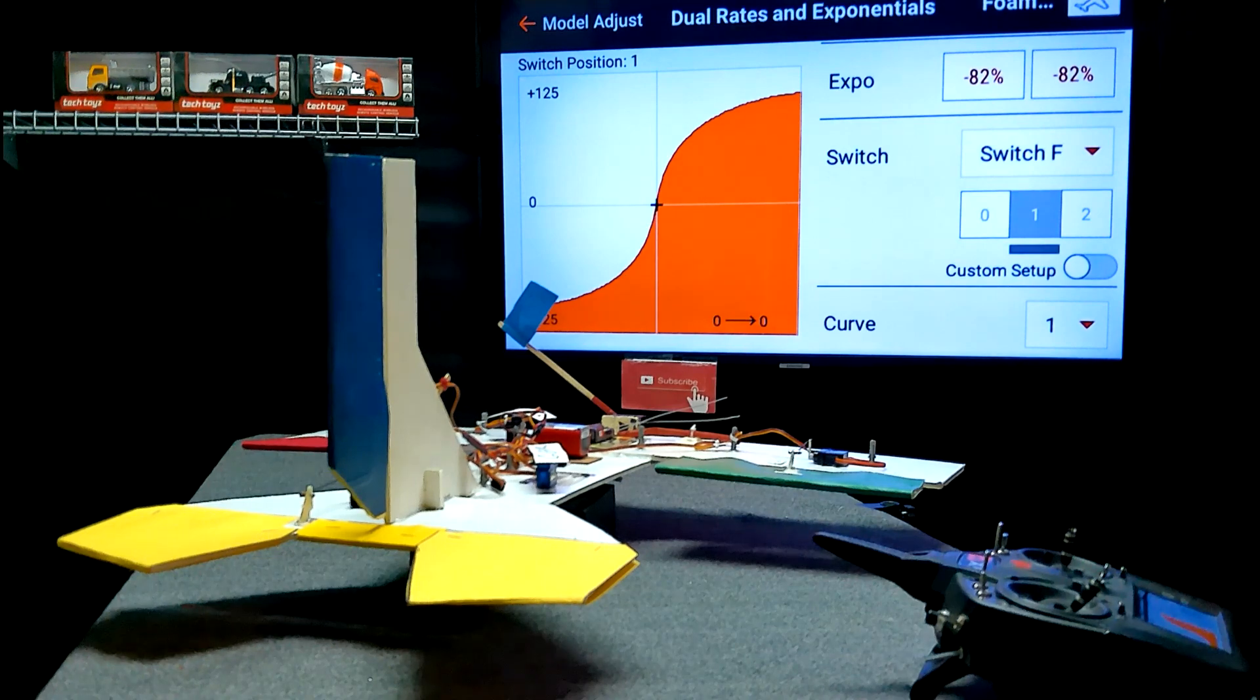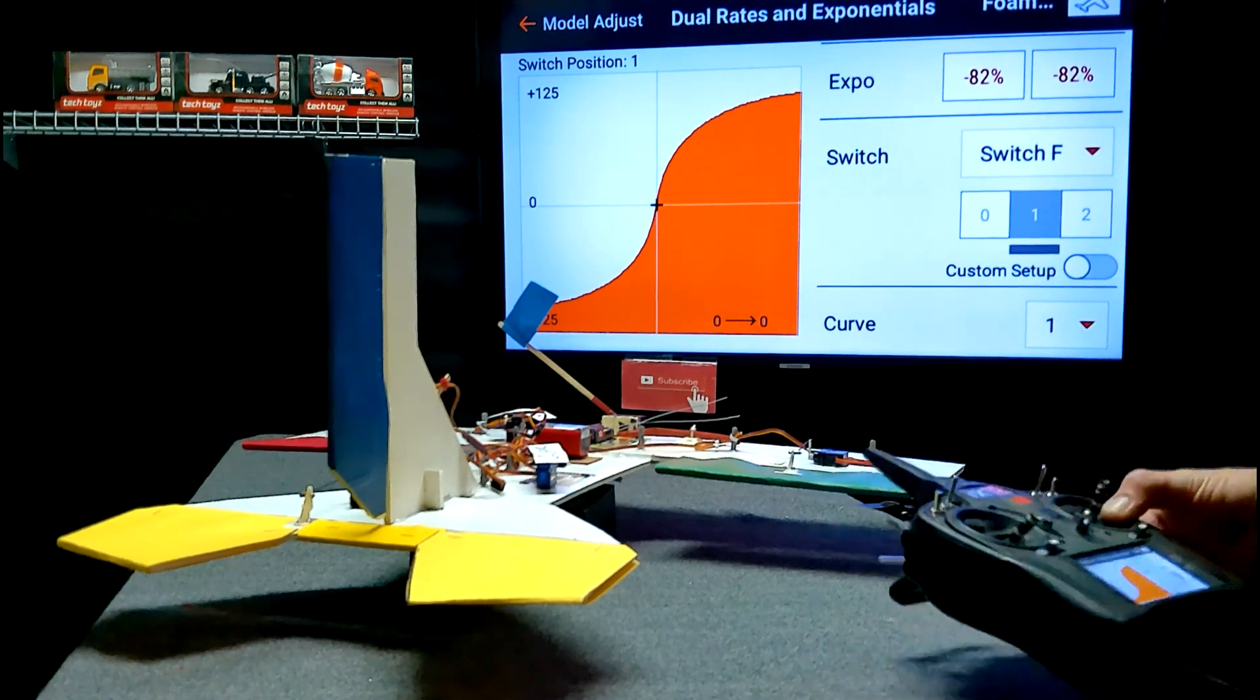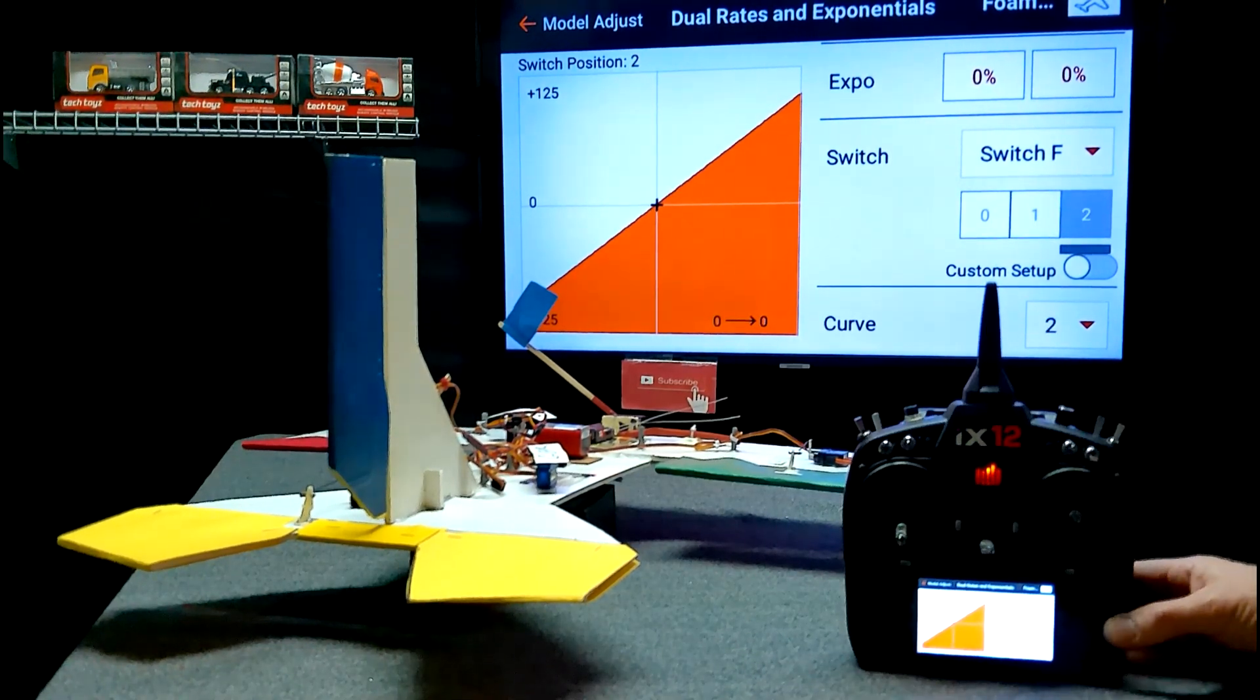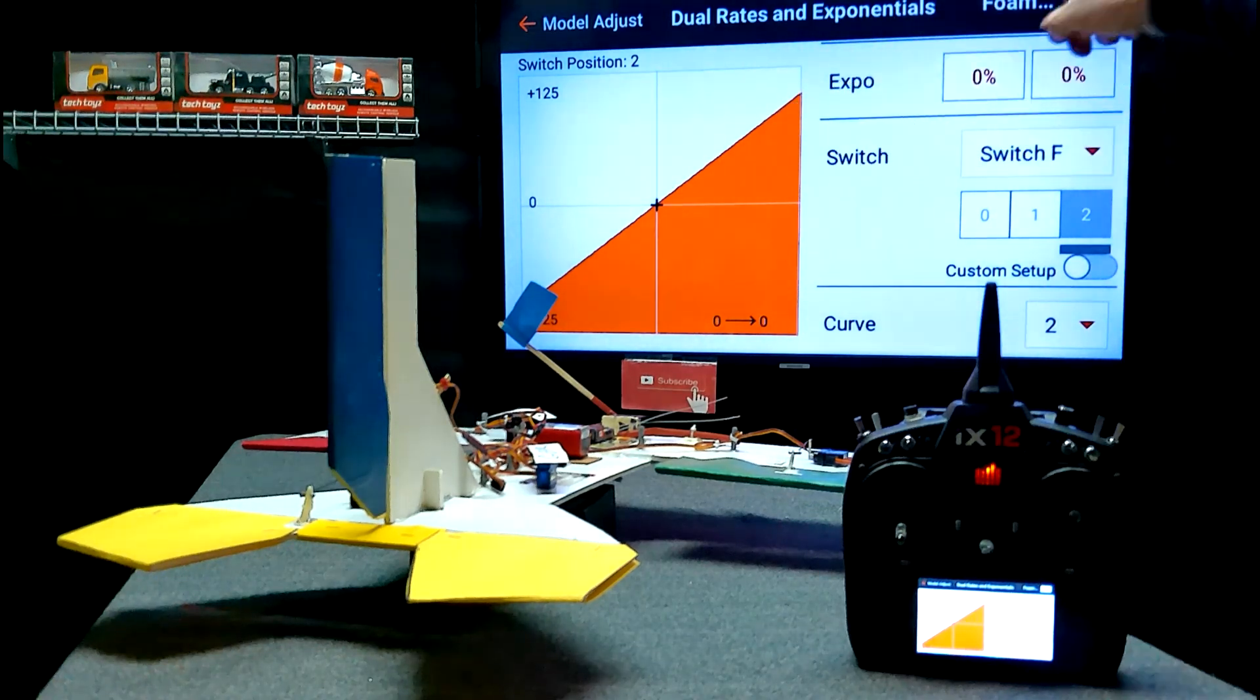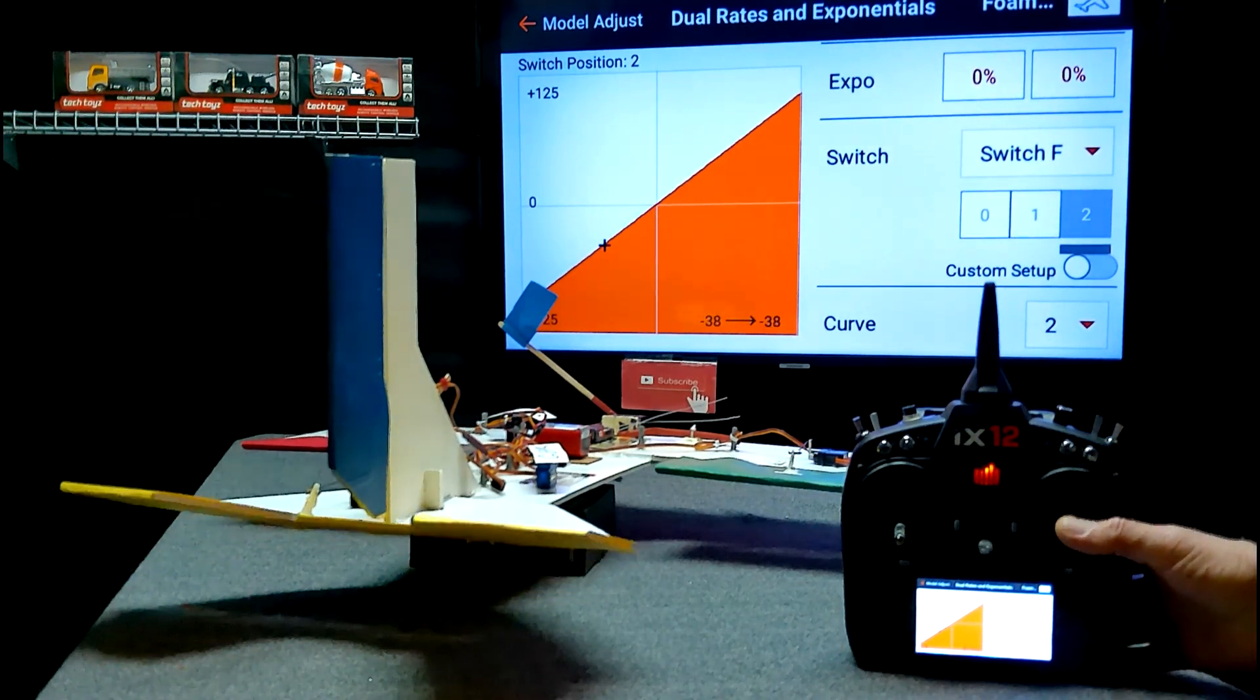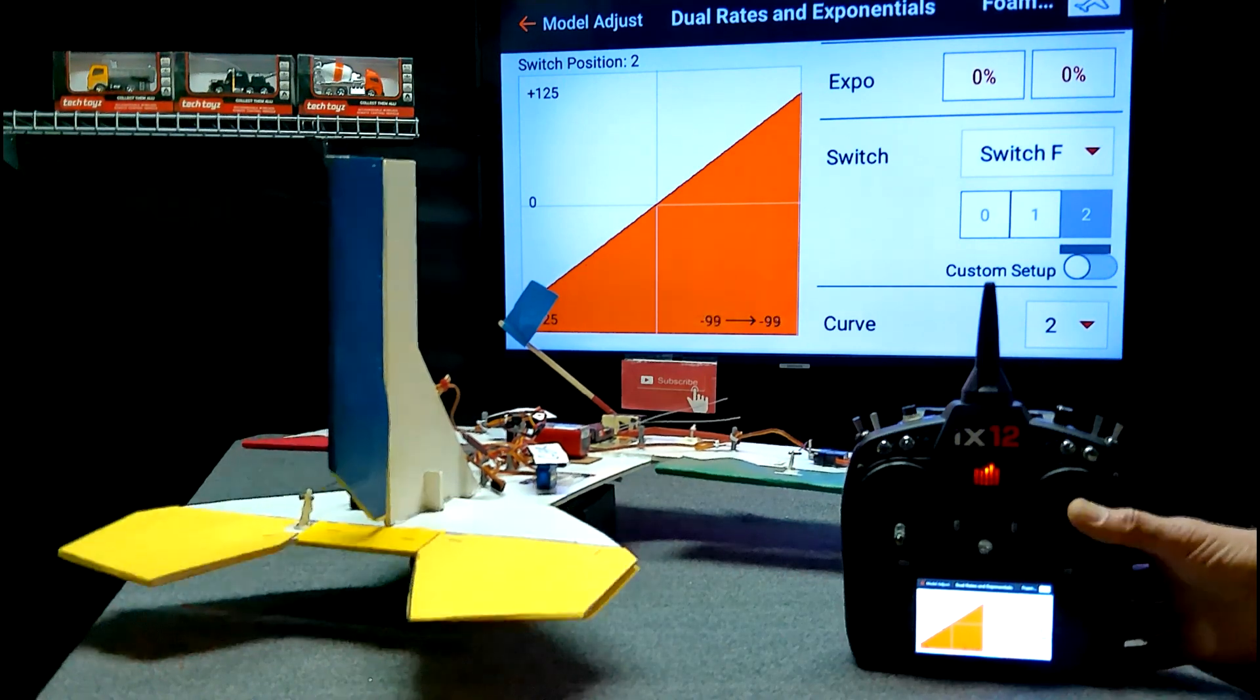Now, the servo, the elevator is going to move faster than my stick does. So now we're in the setting with no Expo. We have a straight line. Watch my thumb, watch the elevator. Elevator moves just as my thumb does.